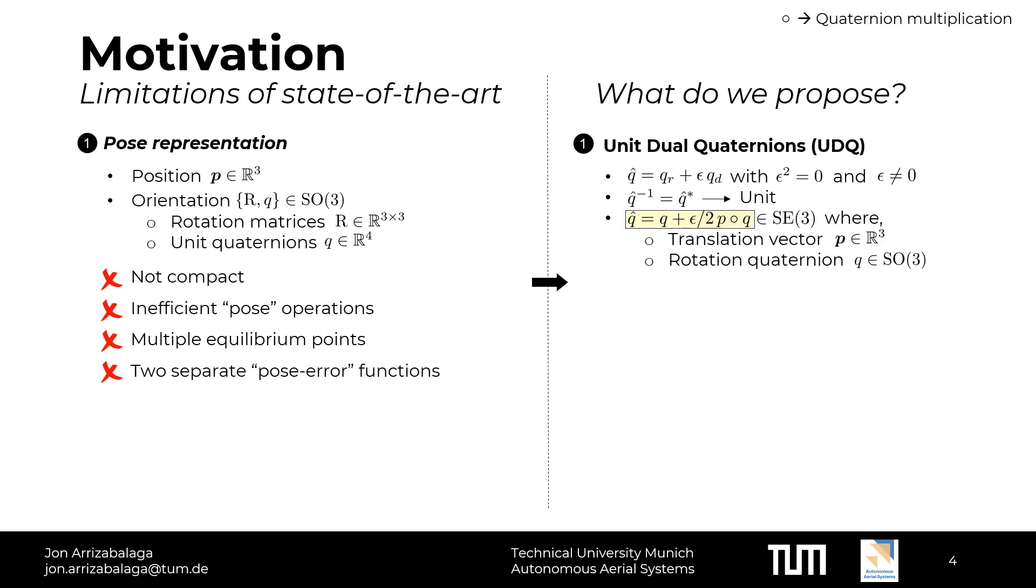More specifically, a unit dual quaternion consisting of a translation vector p and a rotation quaternion q corresponds to a screw motion and is given by the equation highlighted in yellow. Due to time constraints, I will not provide further details on formally defining this screw motion. If you are interested, please check the paper.